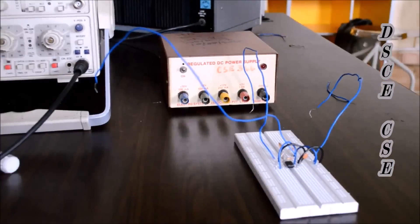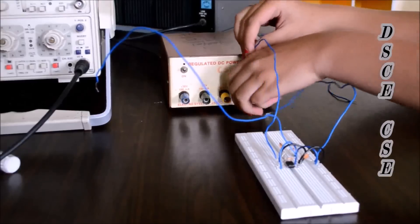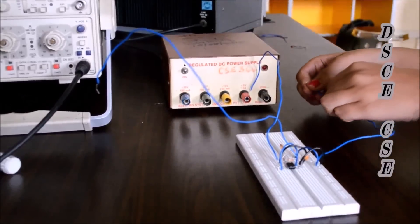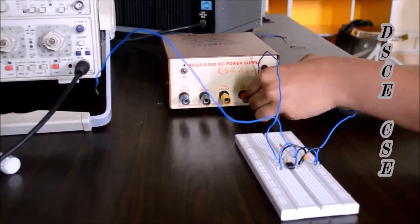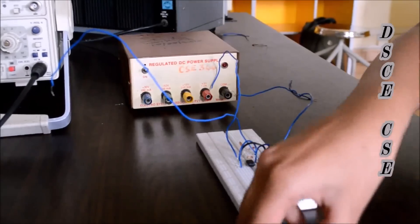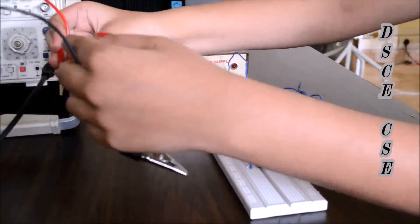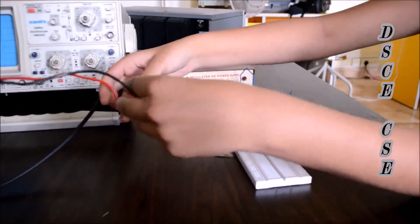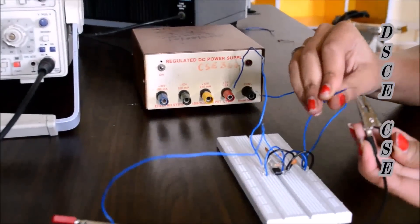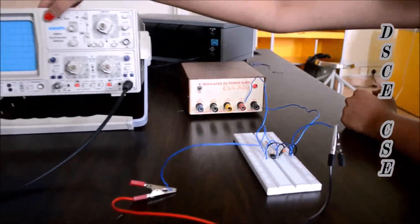In this experiment we used fixed regulated DC power supply. So we will connect pin number 8 to plus 5 volts and common ground to ground terminal. The positive terminal of the CRO has to be connected to pin number 3 and the negative to common ground. Switch on the input supply and the CRO.